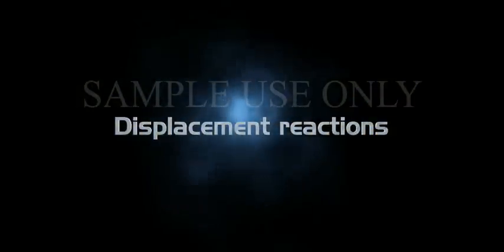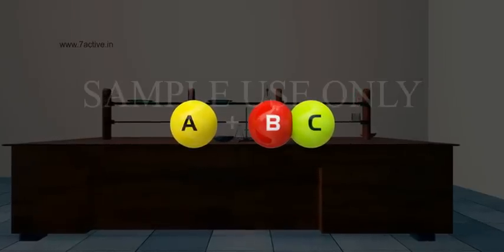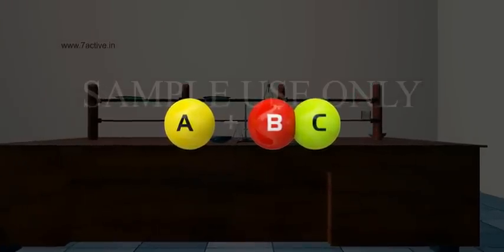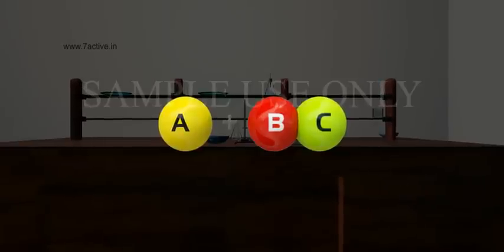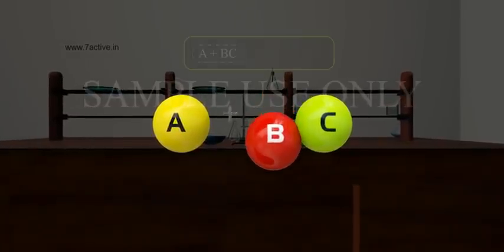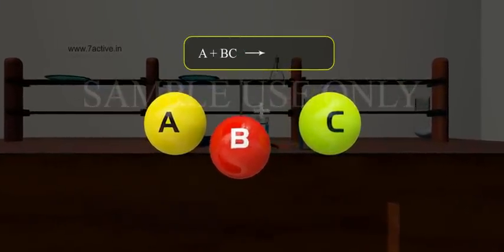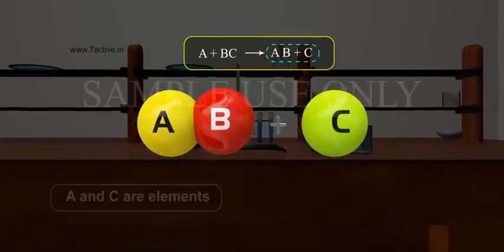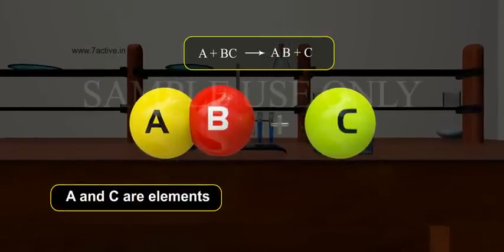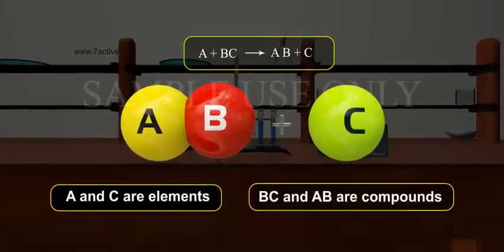Displacement reaction. It is a reaction in which an element reacts with a compound and replaces another element in the compound. A plus BC gives rise to AB plus C. A and C are elements, and BC and AB are compounds.